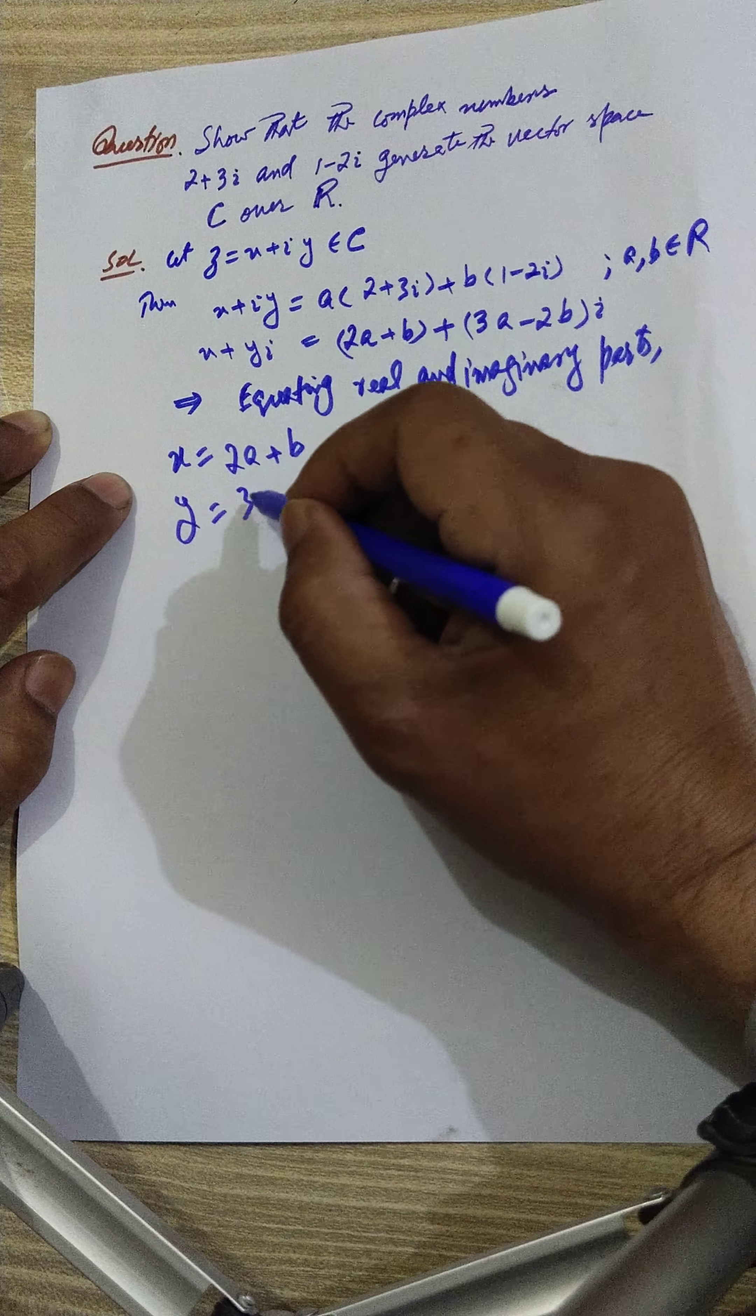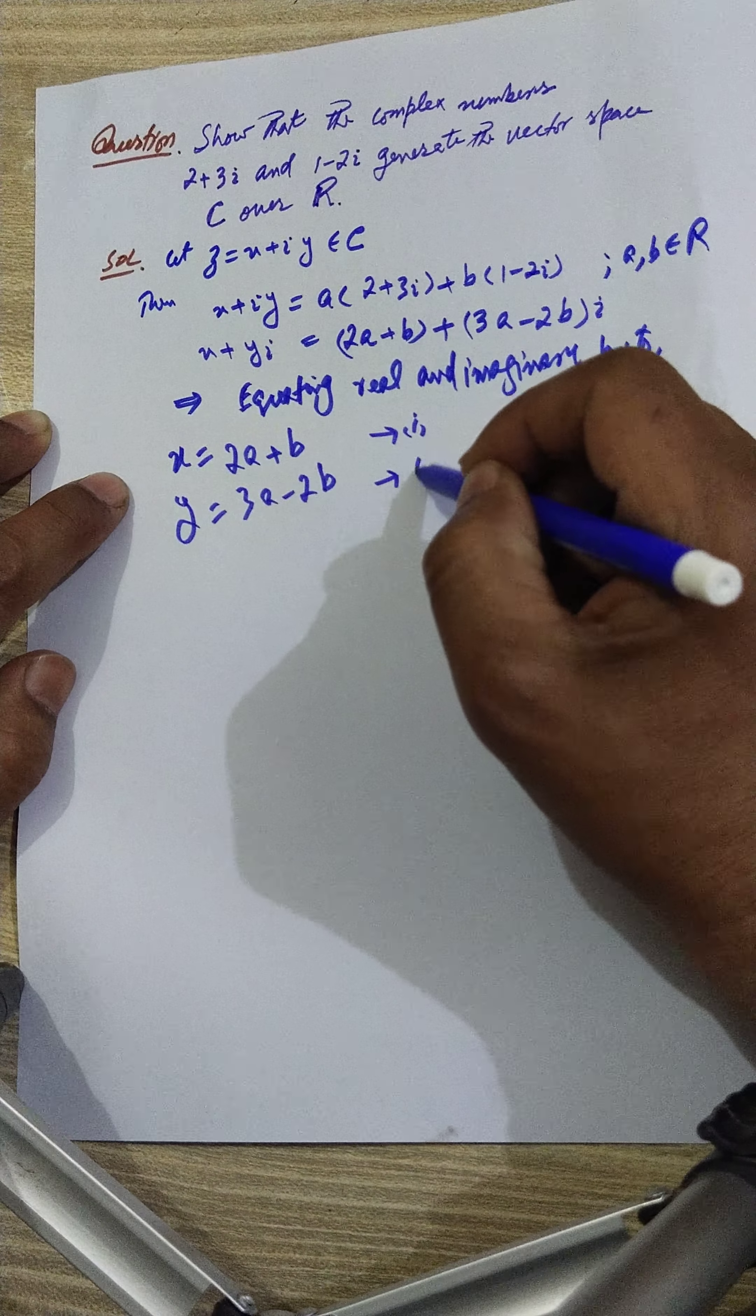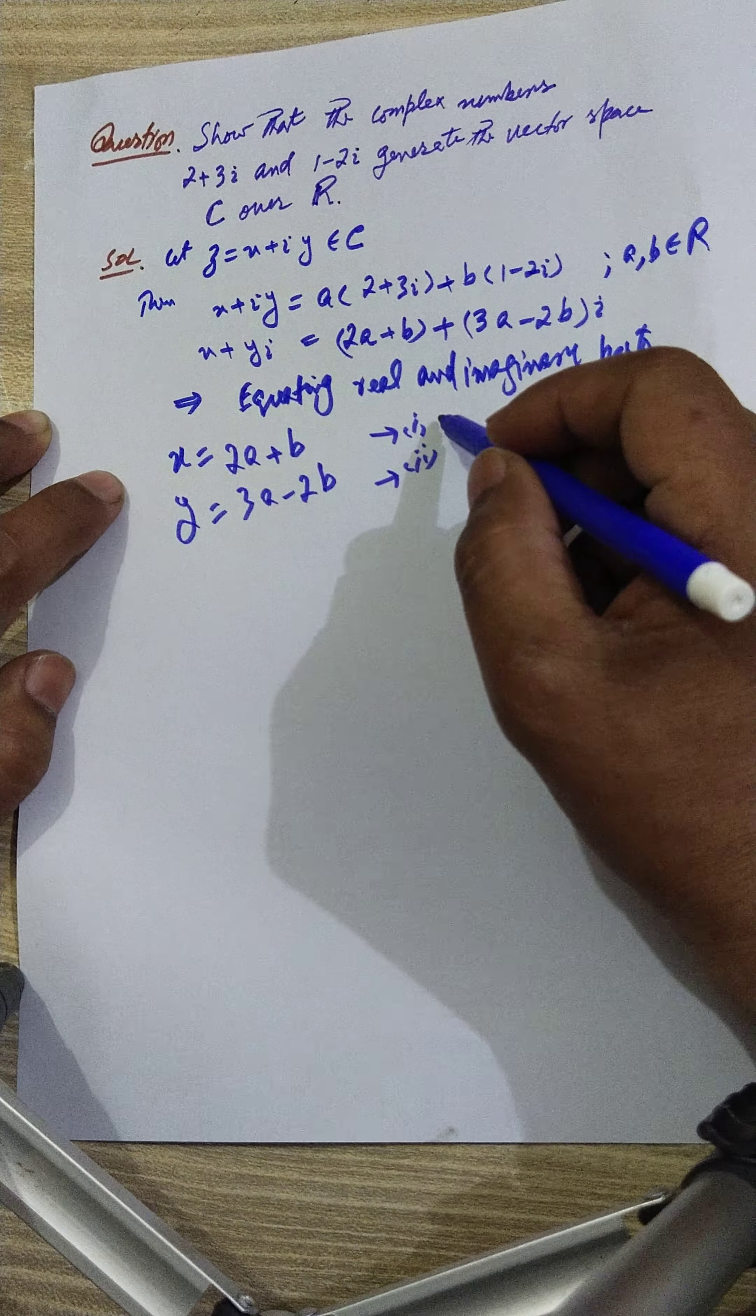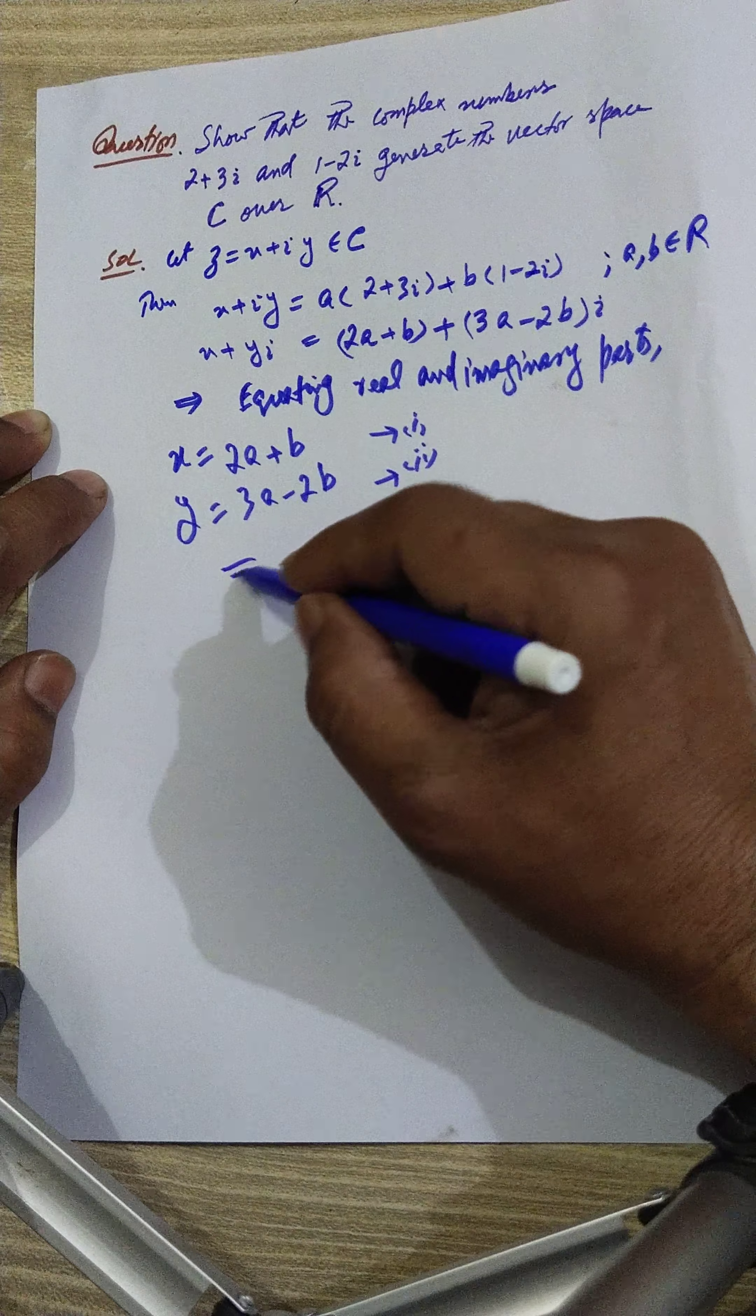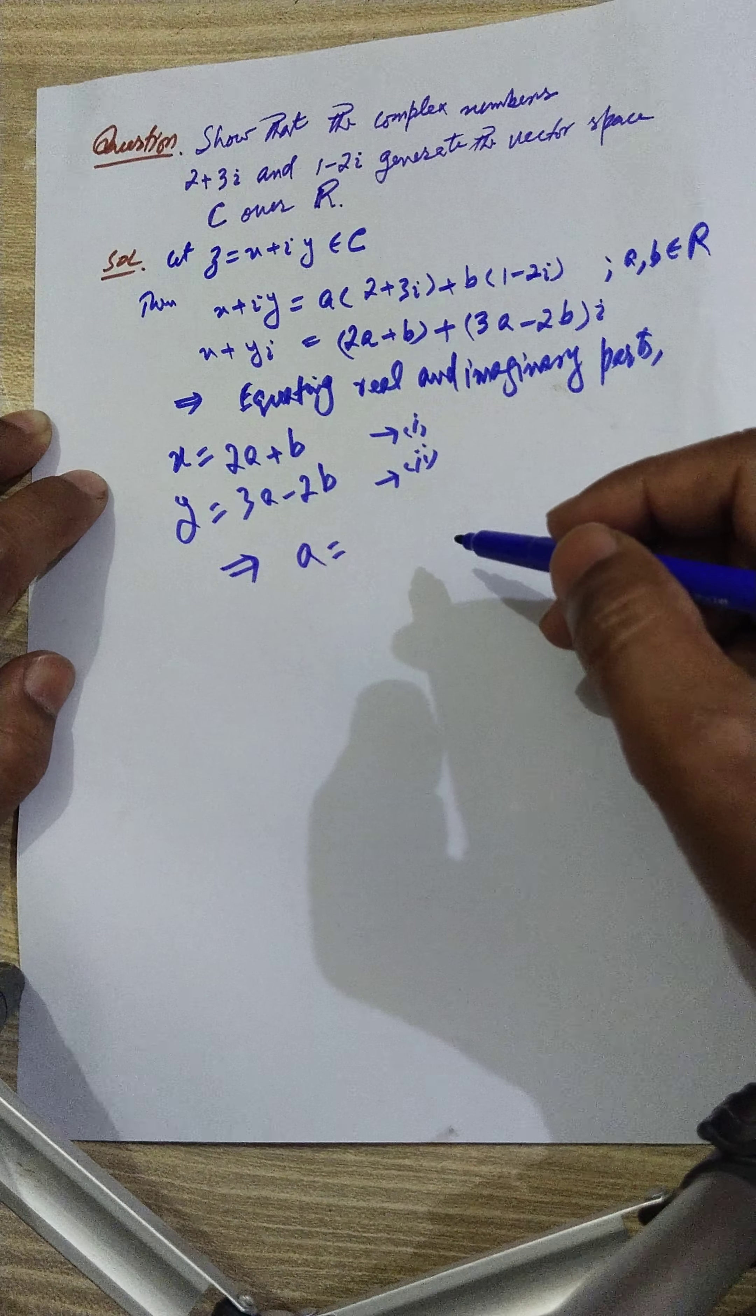Then x equals 2a+b, and y equals the imaginary part, which is 3a-2b. Call this number one and this number two.